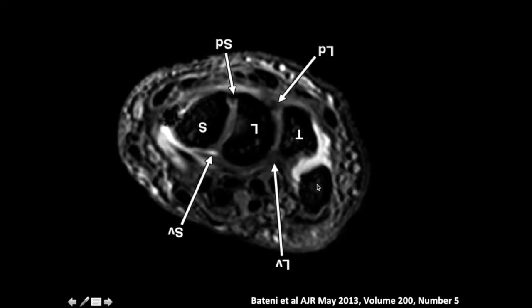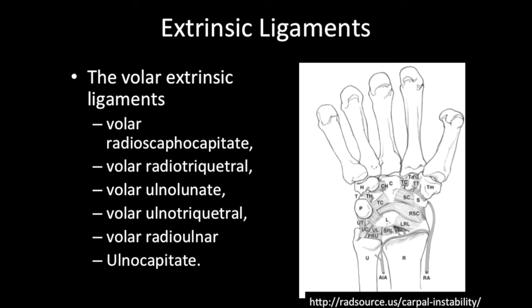Moving along with the extrinsic ligaments of the wrist, the volar extrinsic ligaments are composed of the volar radioscaphocapitate ligament, the volar radiotriquetral ligament, the volar ulnolunate ligament, the volar ulnotriquetral ligament, the volar radial ulnar ligament, and the ulnocapitate ligament. The radioscaphocapitate ligament traveling between the radioscaphoid capitate and the capitate joins with the ulnocapitate ligament traveling between the ulna and the capitate to form the arcuate ligament of the wrist.